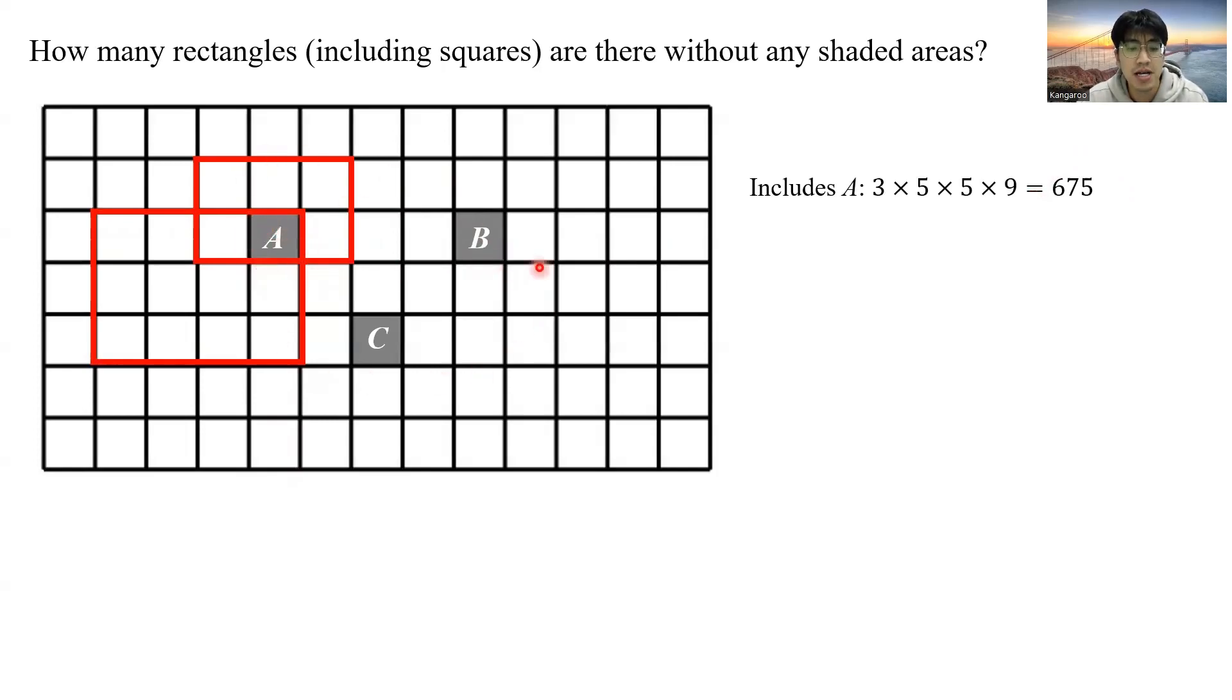And since this shape is symmetry with respect to this middle line, for the rectangles that contain the shaded area B, there are also 675 such rectangles.